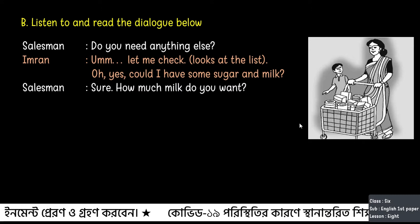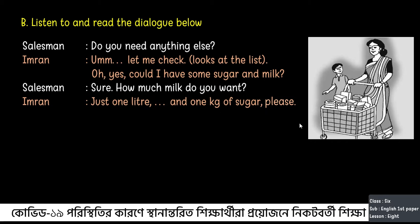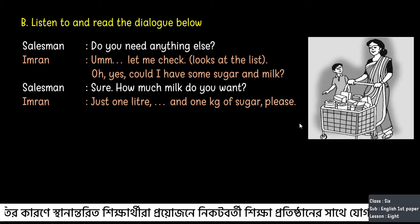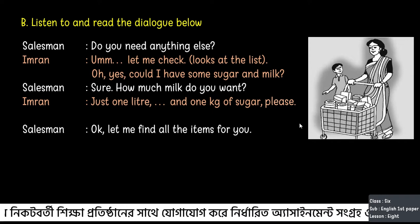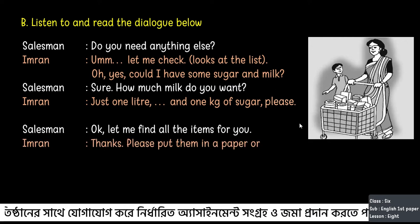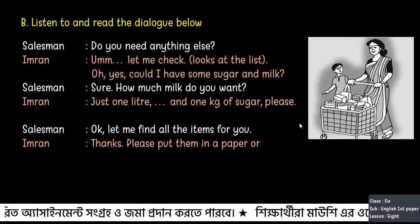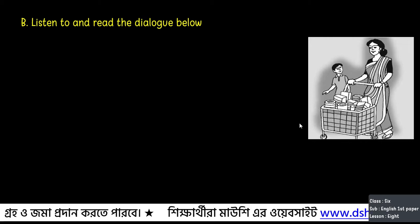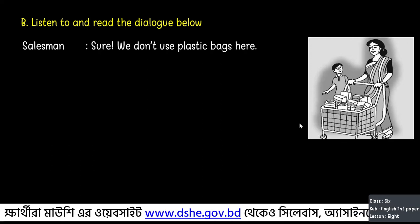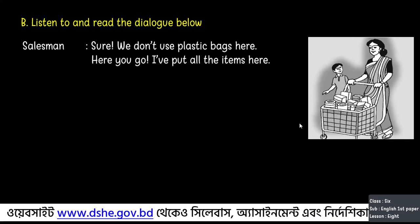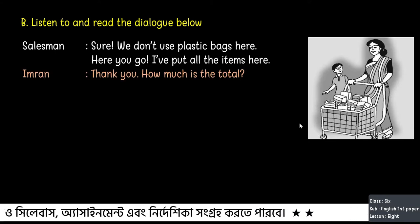Salesman says: Sure, how much milk do you want? Imran answers: Just 1 liter and 1 kg of sugar, please. Salesman says: Okay, let me find all the items for you. Imran says: Thanks. Please put them in a paper or jute bag. Salesman answers: Sure, we don't use plastic bags here. Here you go, I have put all the items here.